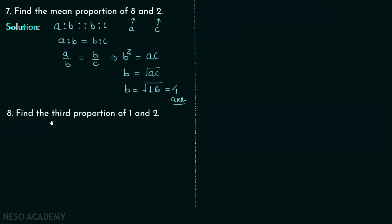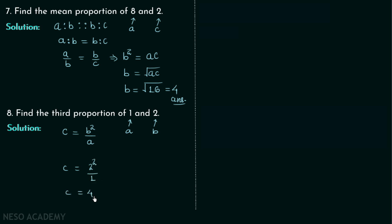In problem number eight, we need to find the third proportion, which is c, using c equals b squared divided by a. Here b equals 2 and a equals 1, so c equals 2 squared divided by 1, which equals 4. So the answer to problem number eight is 4.